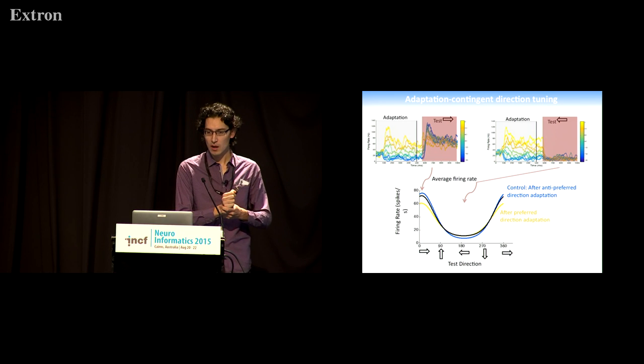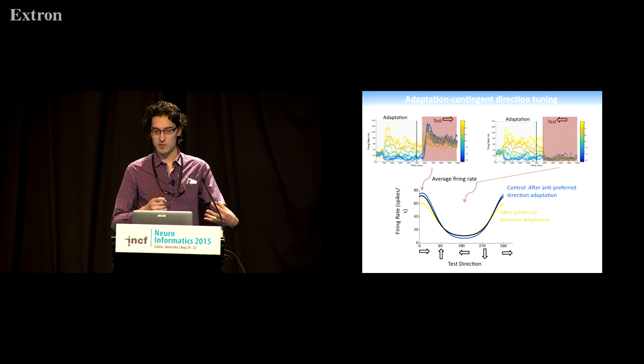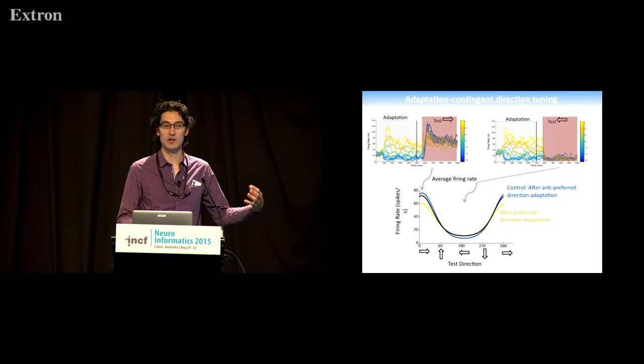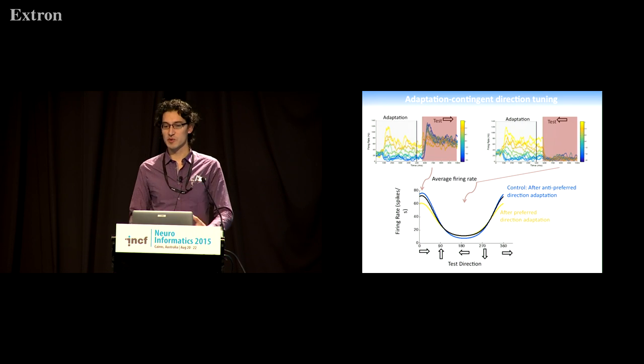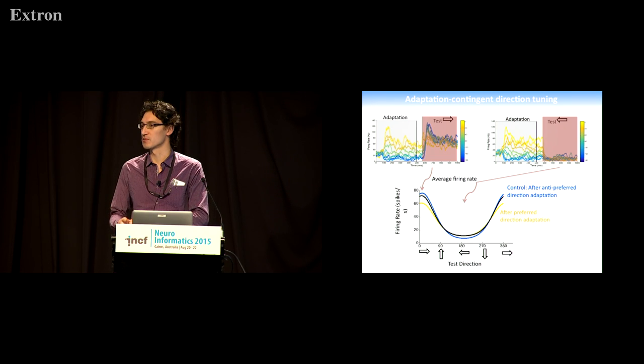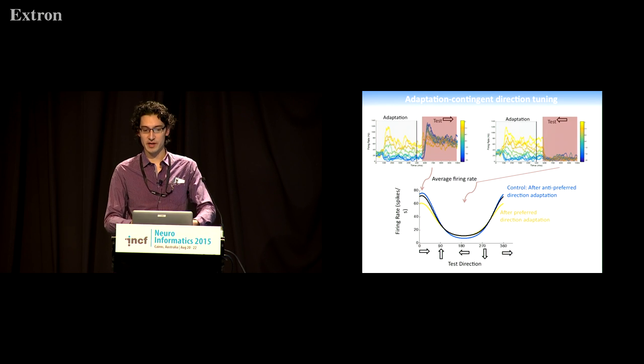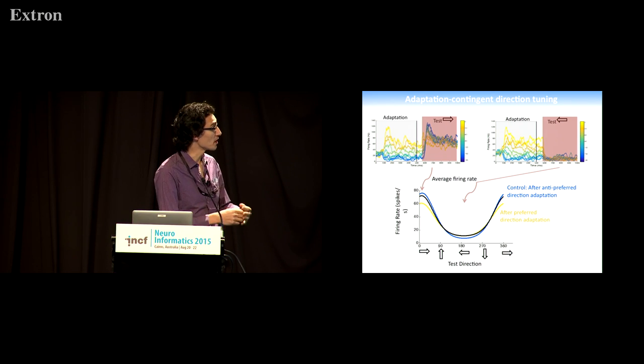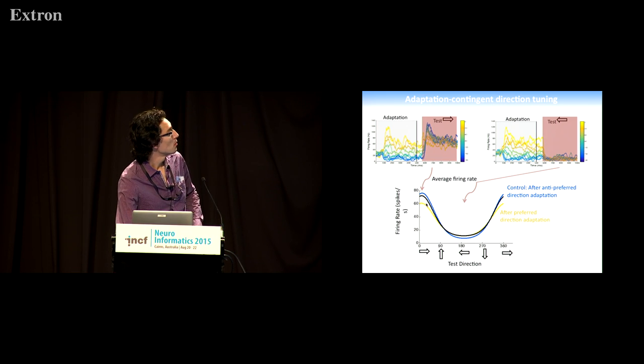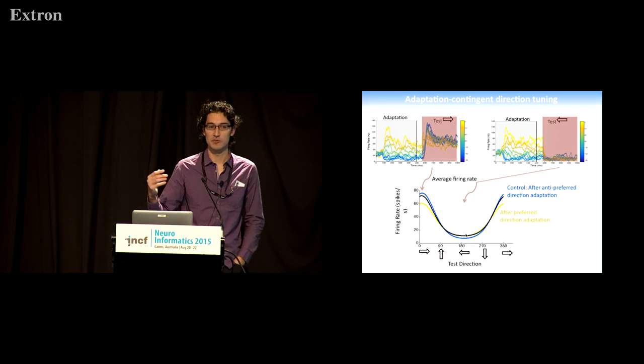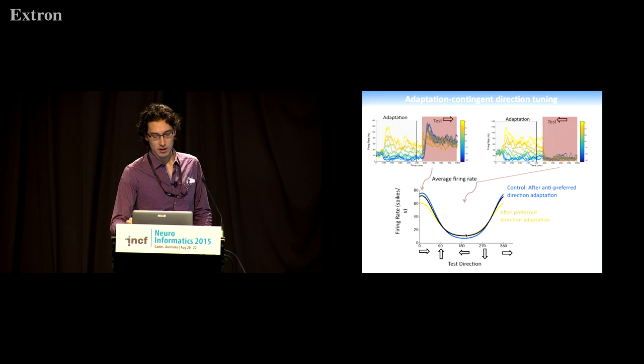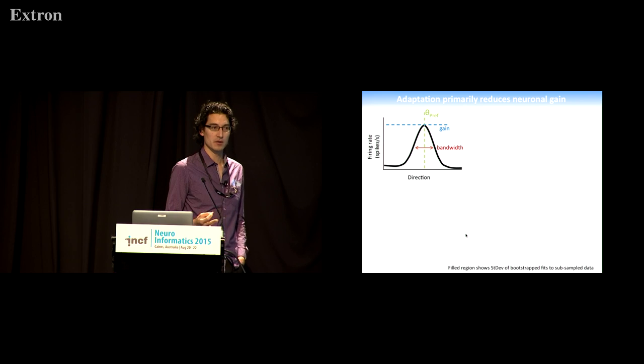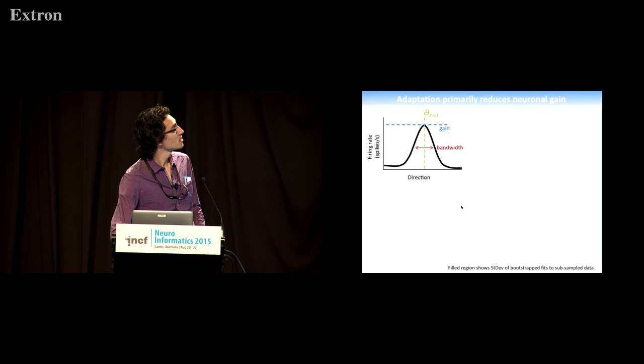I'm not going to show you all the responses for this one neuron; instead I can summarize it as tuning curves. What these tuning curves show is how the response to the test direction is contingent on the previously presented adaptation. I'm going to call the control condition here, shown in blue, the responses that we get, the average spiking rates after anti-preferred direction adaptation. You can see that in comparison, after preferred direction adaptation shown in yellow, we get reduced responses here but we actually get increased responses here. Yellow doesn't come out particularly well, but the fact that we get increased responses here is an indication that we're not just fatiguing the neurons, we're not just reducing their activity—we're fundamentally changing their tuning properties. This is just one neuron.